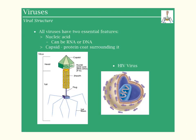So all viruses have two essential features. Those features are nucleic acid — which is essentially DNA or RNA in this case, we can have it either way — and that's going to be involved in this capsid, which is a protein coat that surrounds it. So all viruses at least have this top portion; everything else can be a little bit different.